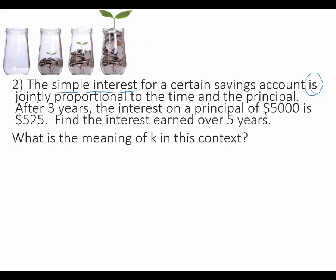The relationship is jointly proportional. Jointly means that it's the same as direct variation, which means we will model it with multiplication. And we know that jointly means that there are more than one variable. And so we see that our other variables are time and principal.